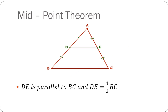The next property is the midpoint theorem. If the midpoint of side AB is point D and the midpoint of side AC is point E, and we join both these points, then DE is parallel to BC and DE equals half of BC. Also, triangle ADE is similar to triangle ABC.